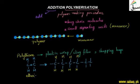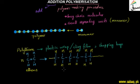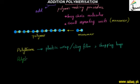Ethene undergoes polymerization to form very long chains. From ethene we make polyethene — the polymer. This is how ethene becomes polyethene through addition polymerization.